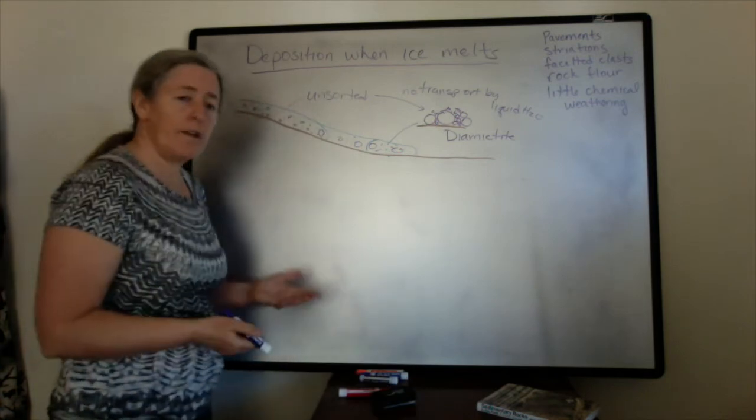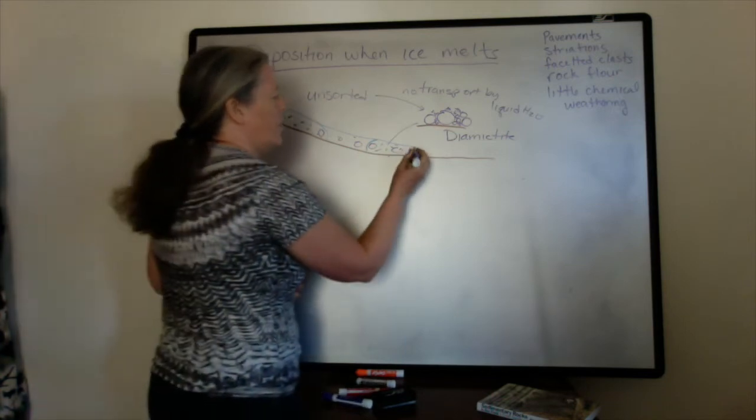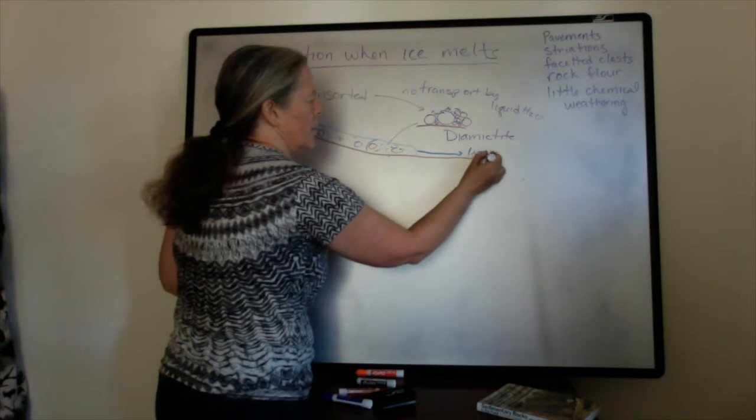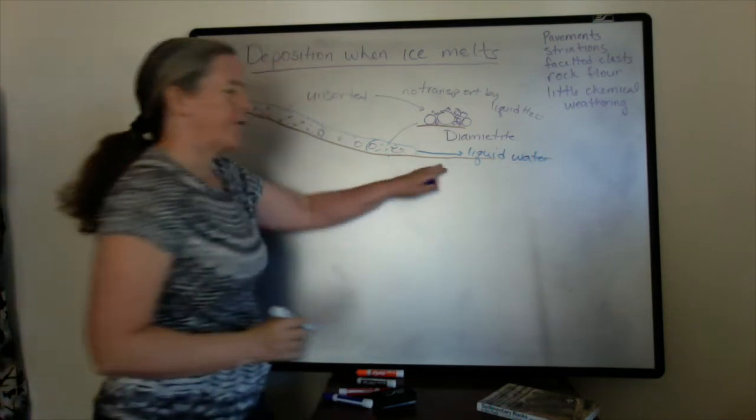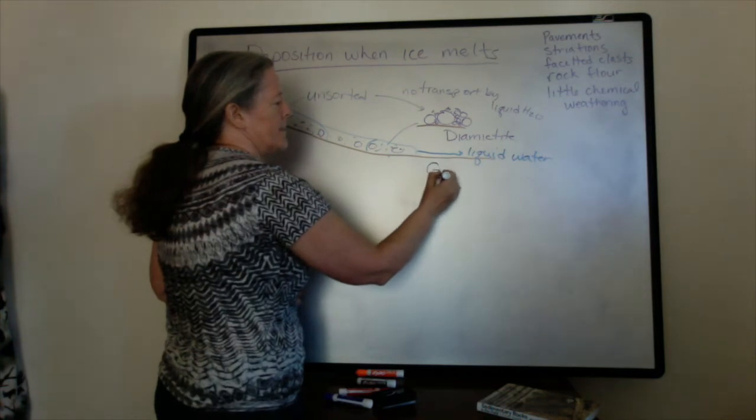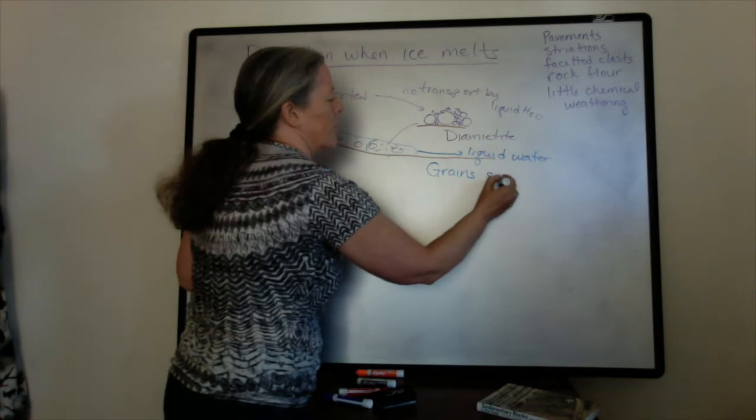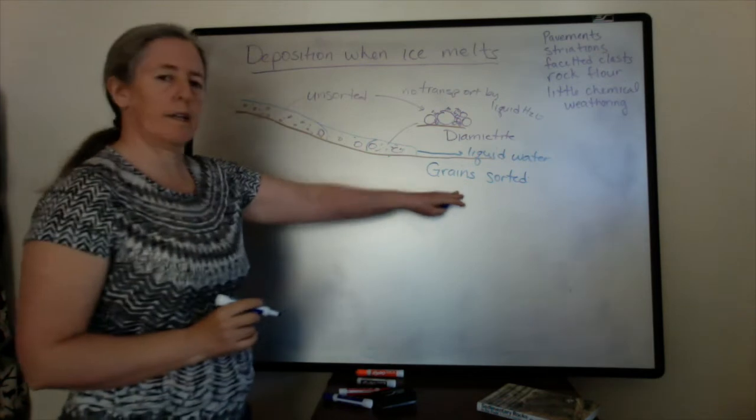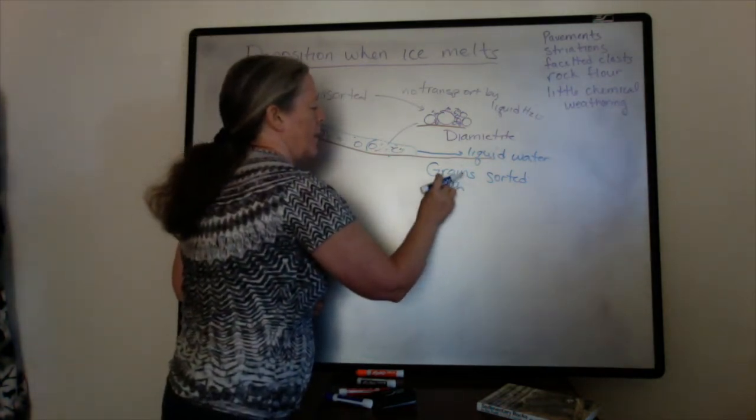So often the water doesn't all sink into the ground and you end up with water flowing downstream. And if you have the liquid water flowing downstream, you transport the grain sizes based on the flow speed, and so the grain sizes become sorted when they're transported by the liquid water.